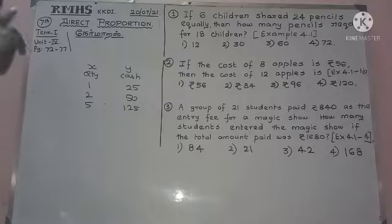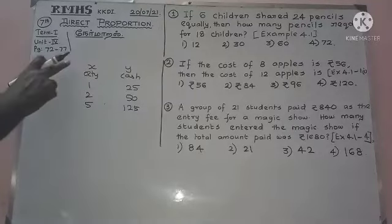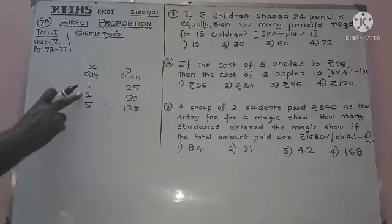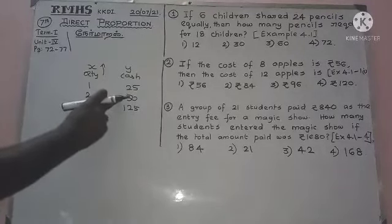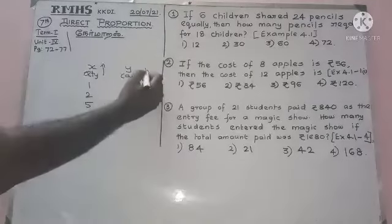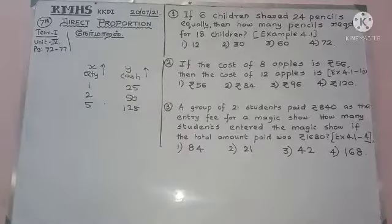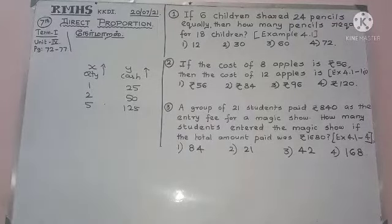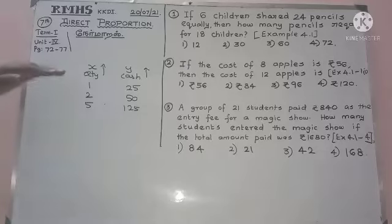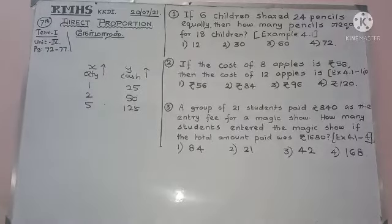If we get a direct proportion, the X variable increases — 1, 2, 5 — and the amount increases in ascending order. So the Y variable also increases. When X increases, Y increases. That is direct proportion.